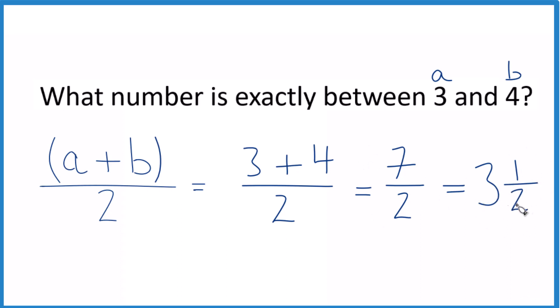You can check that. 3 times 2 is 6. 6 plus 1, that gives us the 7, and we keep the denominator the same. So that's how you figure out what number is exactly between 3 and 4.